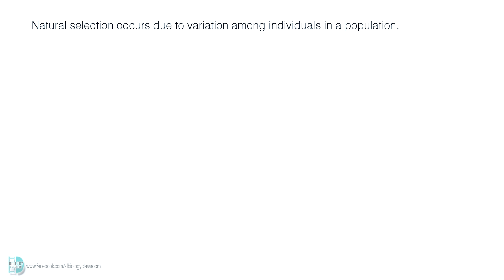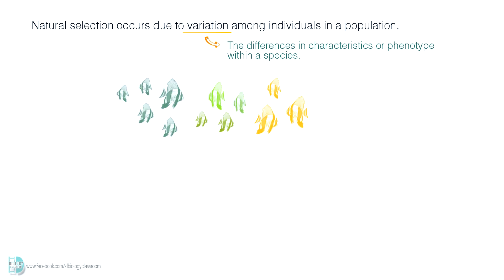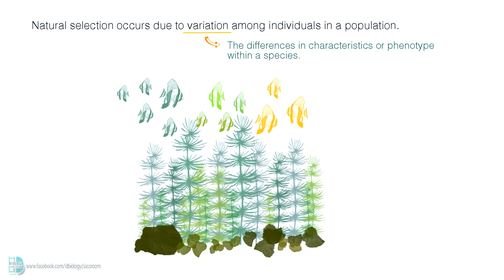Natural selection occurs due to variation among individuals in a population. Variation is defined as the differences in characteristics of phenotypes within a species. For example, in a population of fish, there are a few different types of body color. Some of them are as green as the aquatic plants growing around them, some of them are bright yellow, while many others are somewhere in between.